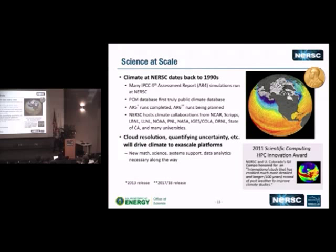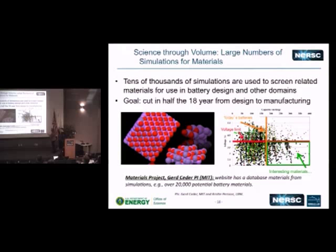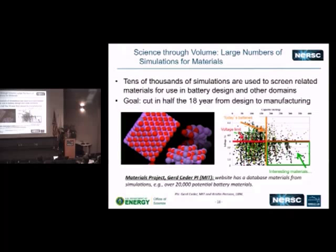The Materials Genome Project aims to decrease the time from design of a new material into manufacturing — cutting 18 years in half. The idea is to search through a whole space of related materials, narrow down to the interesting part, so that when you go back into the lab and synthesize things you're not searching the entire space. This gets into the case where you want a sophisticated interface to drive the simulations — you don't want to submit each of these jobs one at a time.